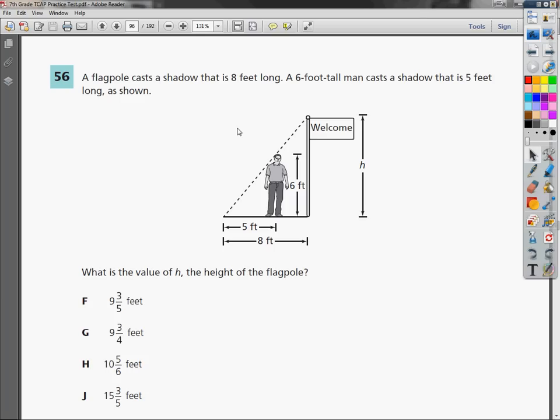Grade 7 TCAP practice test. This is math. Question number 56. A flagpole casts a shadow that is 8 feet long. A 6 foot tall man casts a shadow that is 5 feet long, as shown. What is the height of the flagpole?